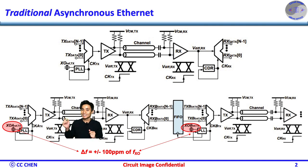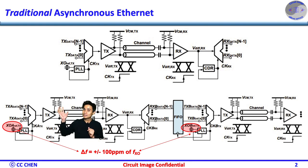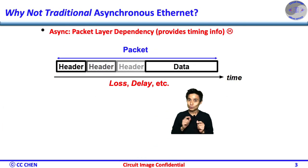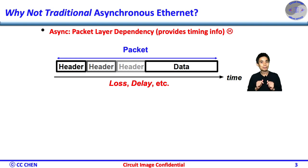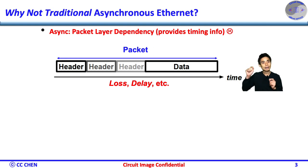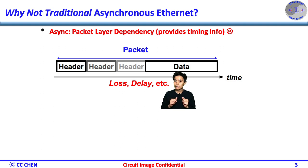It looks like Synchronous Ethernet should be okay. However, Synchronous Ethernet will rely on sending timing information in packet layers over a physical layer. Therefore, it will be influenced by impairments introduced by the higher levels of networking technology, such as packet loss, packet delay variation, etc.